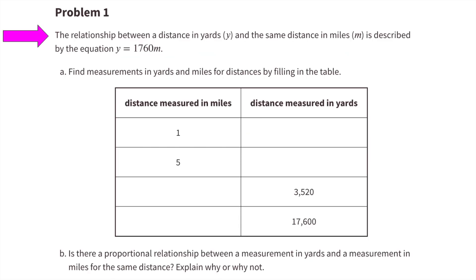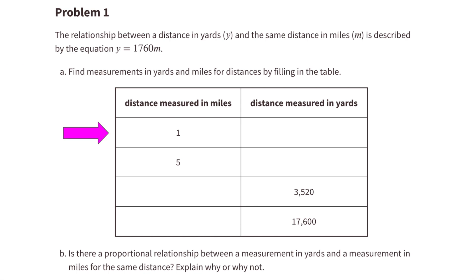Number 1. The relationship between a distance in yards, y, and the same distance in miles, m, is described by the equation y equals 1760m. Part A: fill in the table with distances measured in miles on the left and distances measured in yards on the right, labeled m and y. 1 times 1760 — so there are 1760 yards in 1 mile.